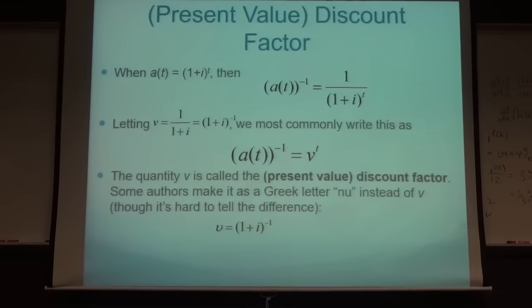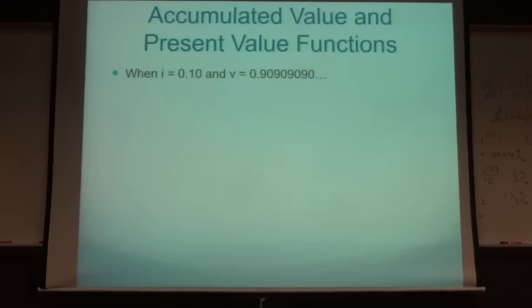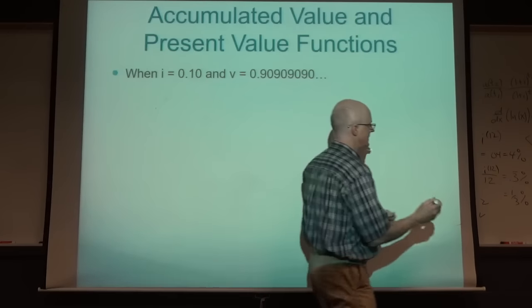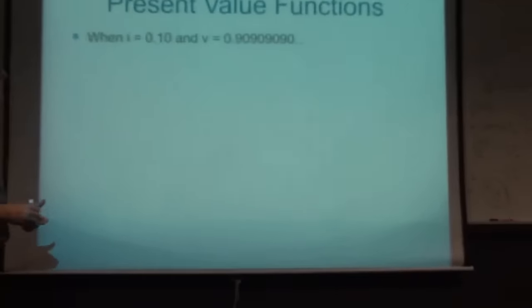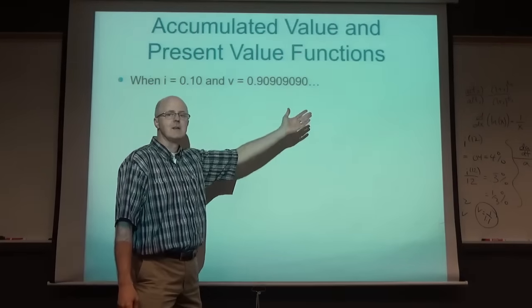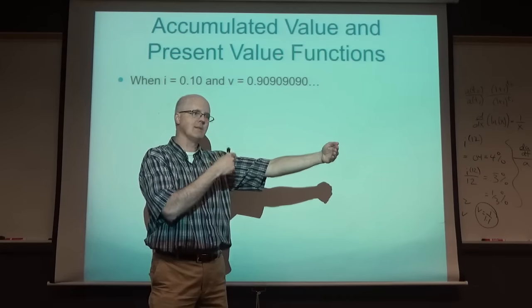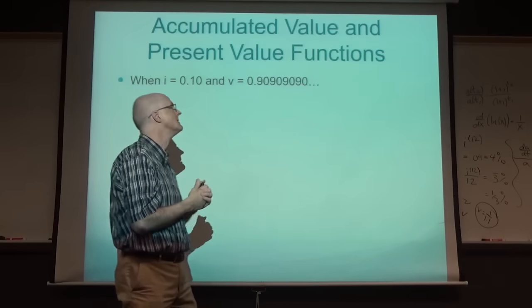As an example: if the effective annual interest rate is 10%, then v = 1/1.1 ≈ 0.90909... ≈ 90.9%. If your money grows by 10% in a year, you can think of it the opposite way: the present value of $1 one year in the future is about $0.91 at time zero.